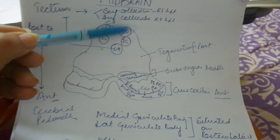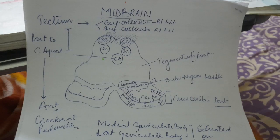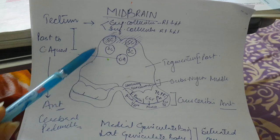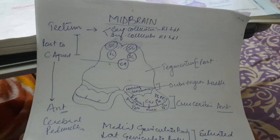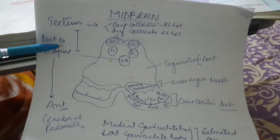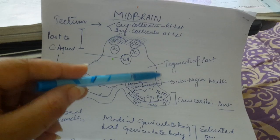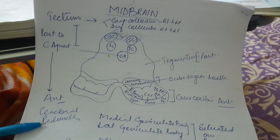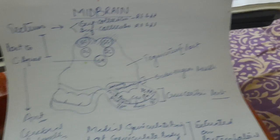You can see I have drawn the superior colliculus here as well, hidden with a shadow. To subdivide the midbrain, we take the cerebral aqueduct in the center. The area which lies posterior to the cerebral aqueduct is called the tectum, and the area which lies anterior to the cerebral aqueduct is called the cerebral peduncle.